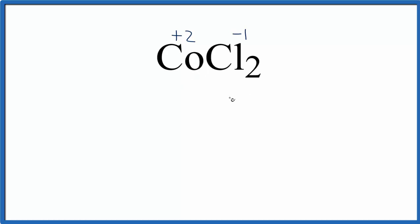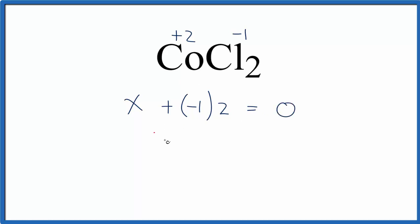You can also do this algebraically. We don't know what cobalt is — let's call that X. Chlorine is minus 1, but we have two chlorines. That all should add up to 0, since this is a neutral compound. So X plus minus 2 equals 0. Add 2 to both sides, and that gives us X is plus 2 — the same oxidation number we got for cobalt initially.